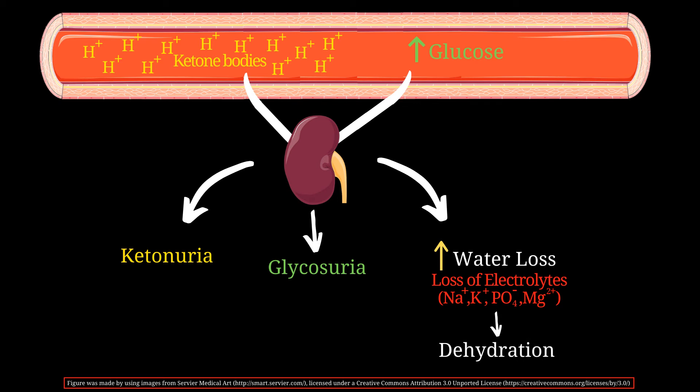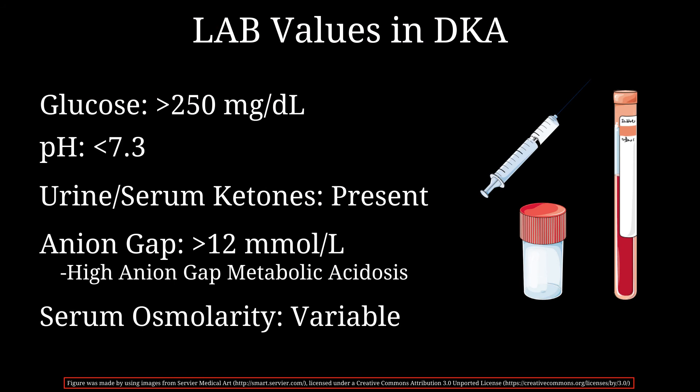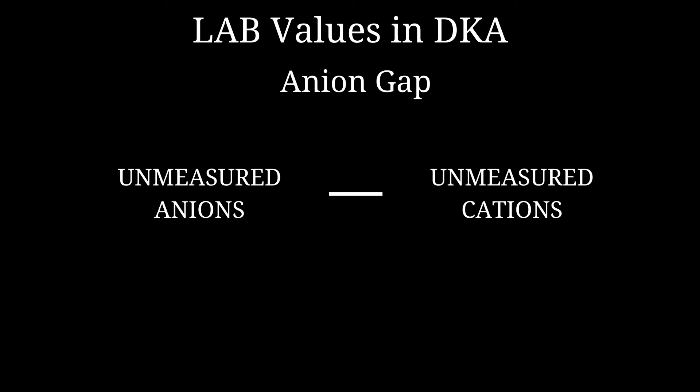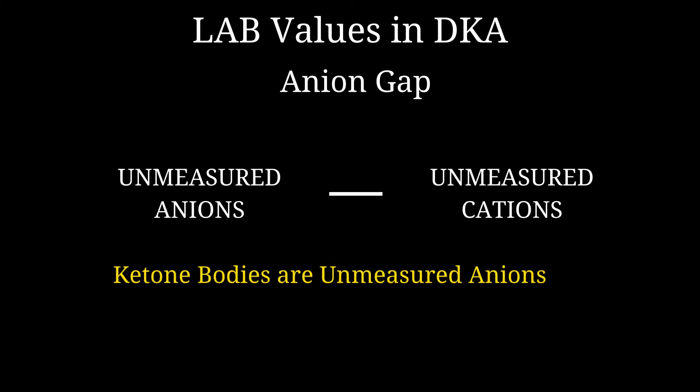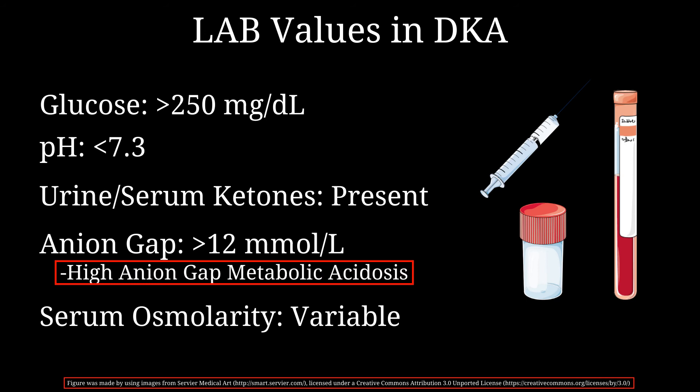Lab values in diabetic ketoacidosis: glucose levels will be high, usually above 250 mg/dL; pH will be low due to ketoacidosis; urine and serum ketones will be present. For anion gap, calculated as the difference between unmeasured anions and unmeasured cations — since ketone bodies are unmeasured anions, the anion gap will be high. This state is referred to as high anion gap metabolic acidosis. Serum osmolarity is variable and has more significance in hyperosmolar hyperglycemic state.